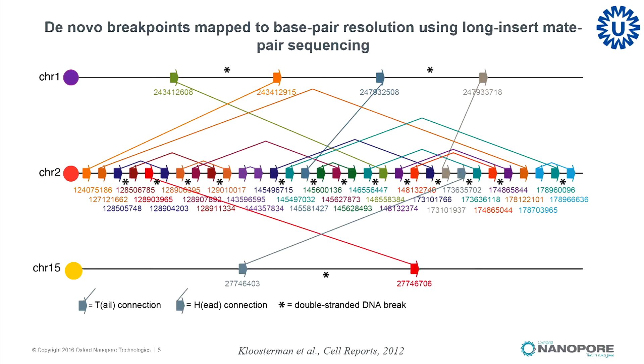When we did this and mapped all the data to the reference genome — this is just one example of the karyotype I showed in the previous slide — we saw very complex chromosomal rearrangements. This plot nicely illustrates this: there are three chromosomes that are affected in this patient, all de novo breakpoints, and the lines connecting all the different chromosomal coordinates basically represent breakpoint junctions. This is my alternative to the circle plots you very often see in papers.